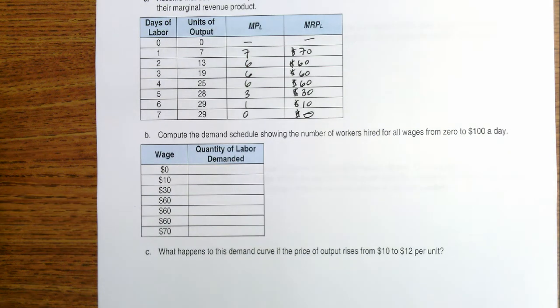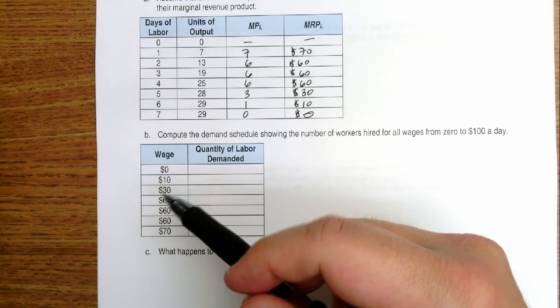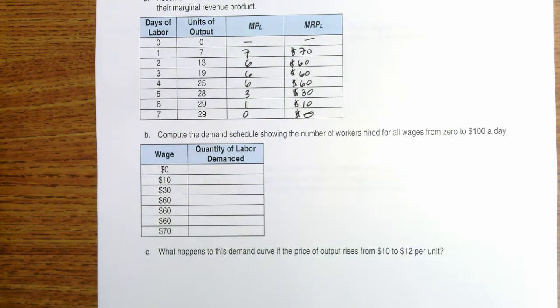This part of the question is asking us to identify our demand for labor depending on whether the wage is zero, ranging up to $70 a day.